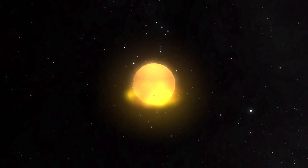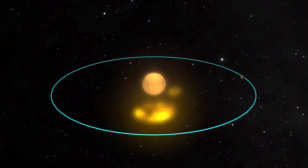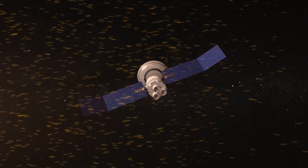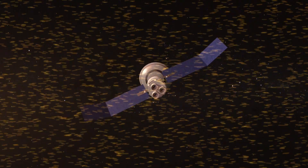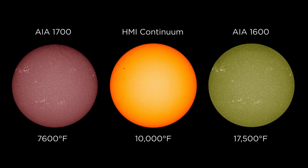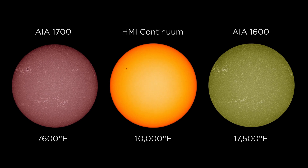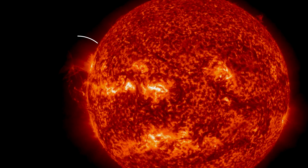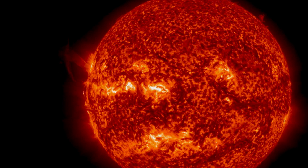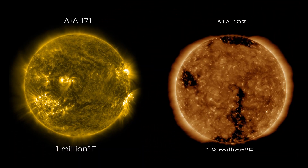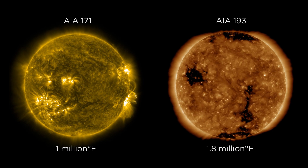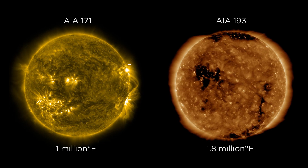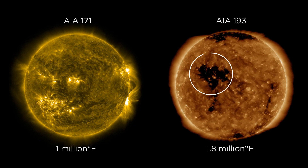This allows us to study how the sun releases material that can travel across the solar system and affect our technology in space and on Earth. These wavelengths show us the sun's upper atmospheric layers at different temperatures. This wavelength highlights filaments and prominences. These wavelengths highlight the corona, the sun's atmosphere that is much hotter than the sun's surface, and shows features like coronal loops and coronal holes.